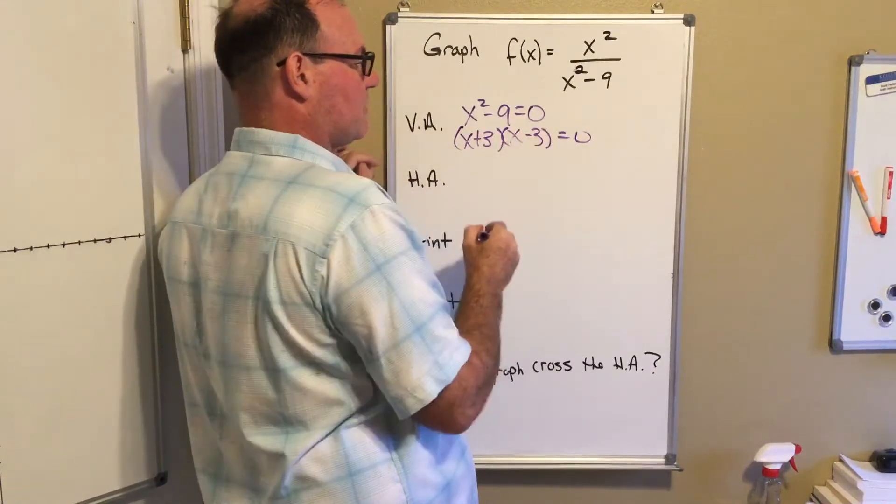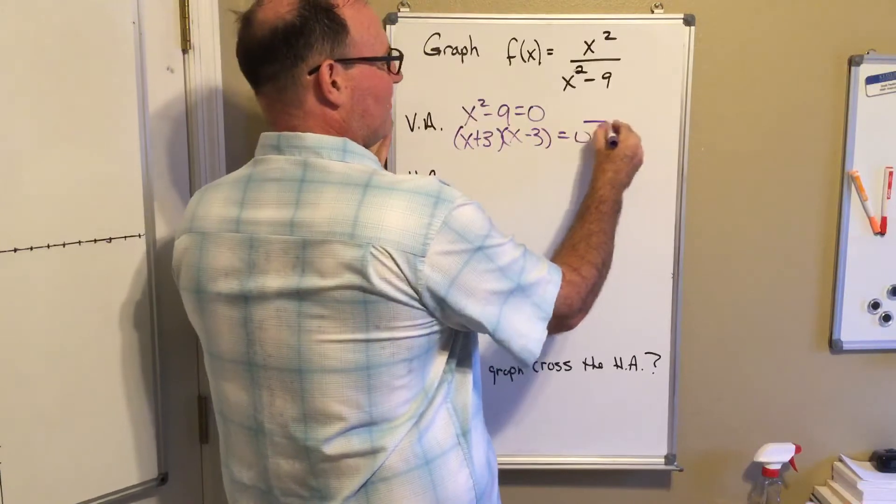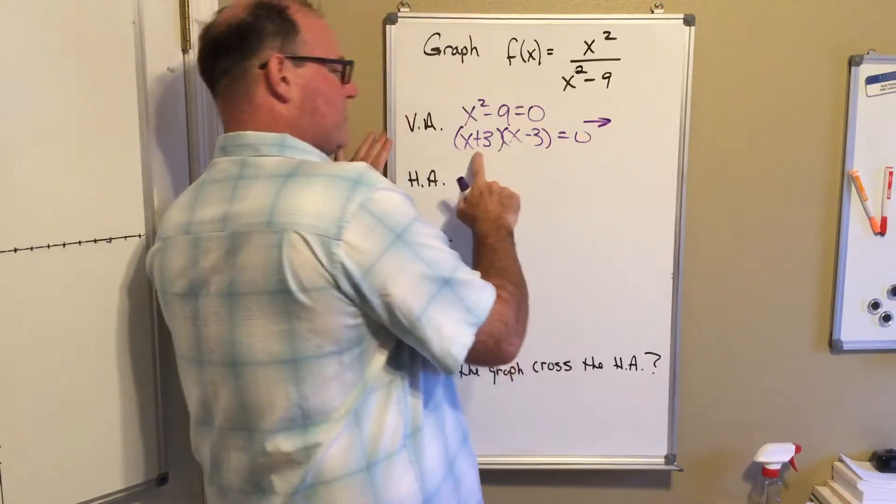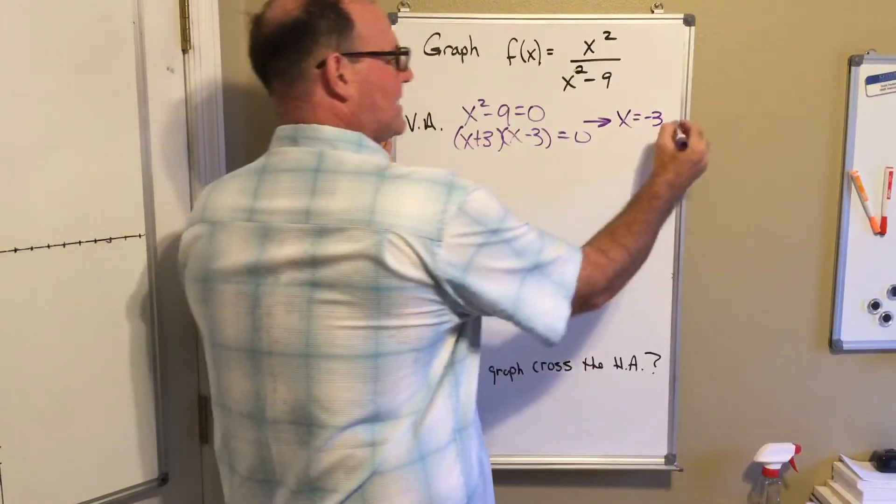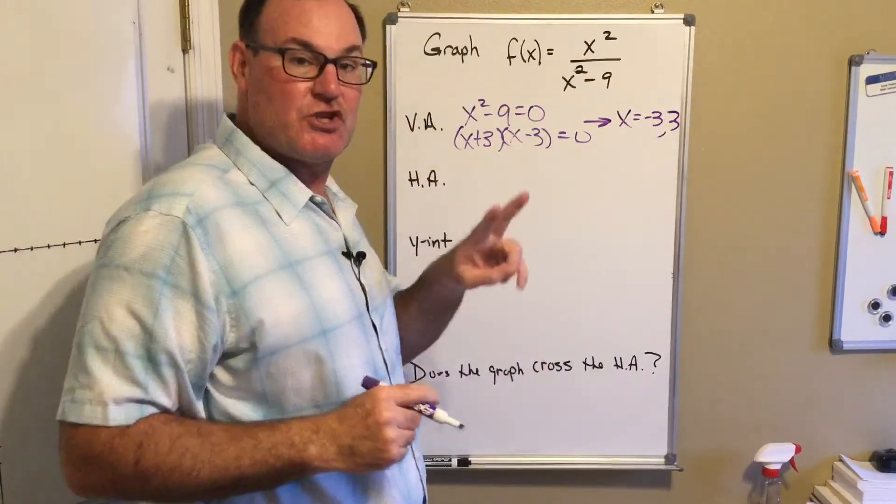And so that means I have two vertical asymptotes. One of them is going to be at the x value negative 3, and one is at the x value positive 3.